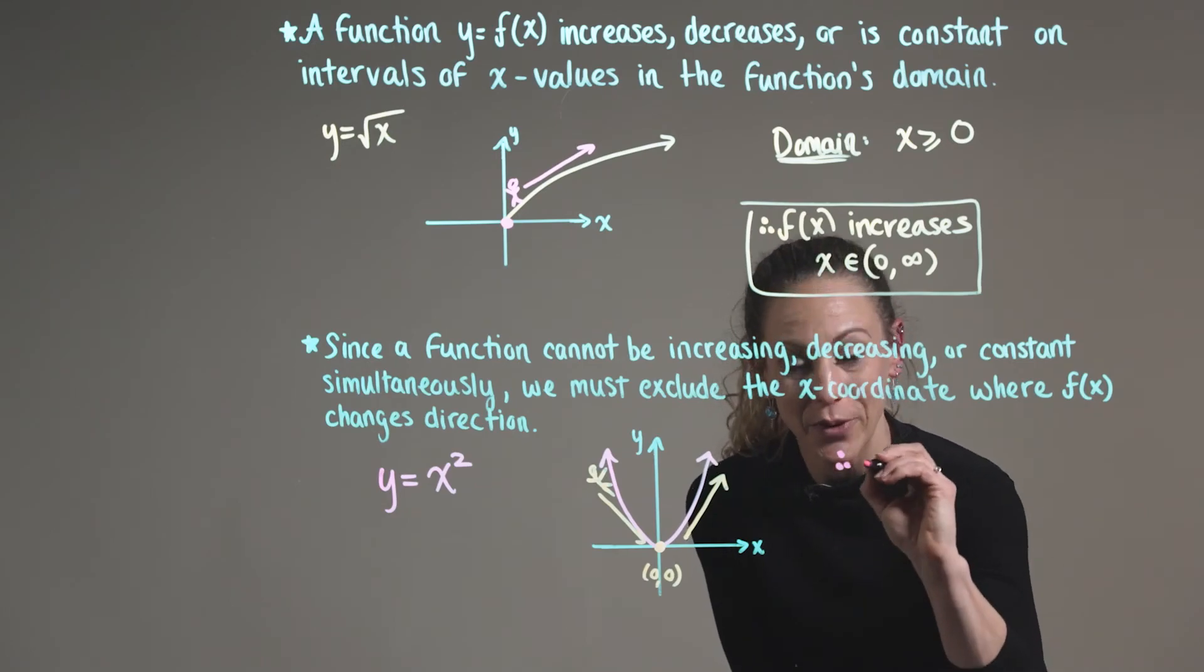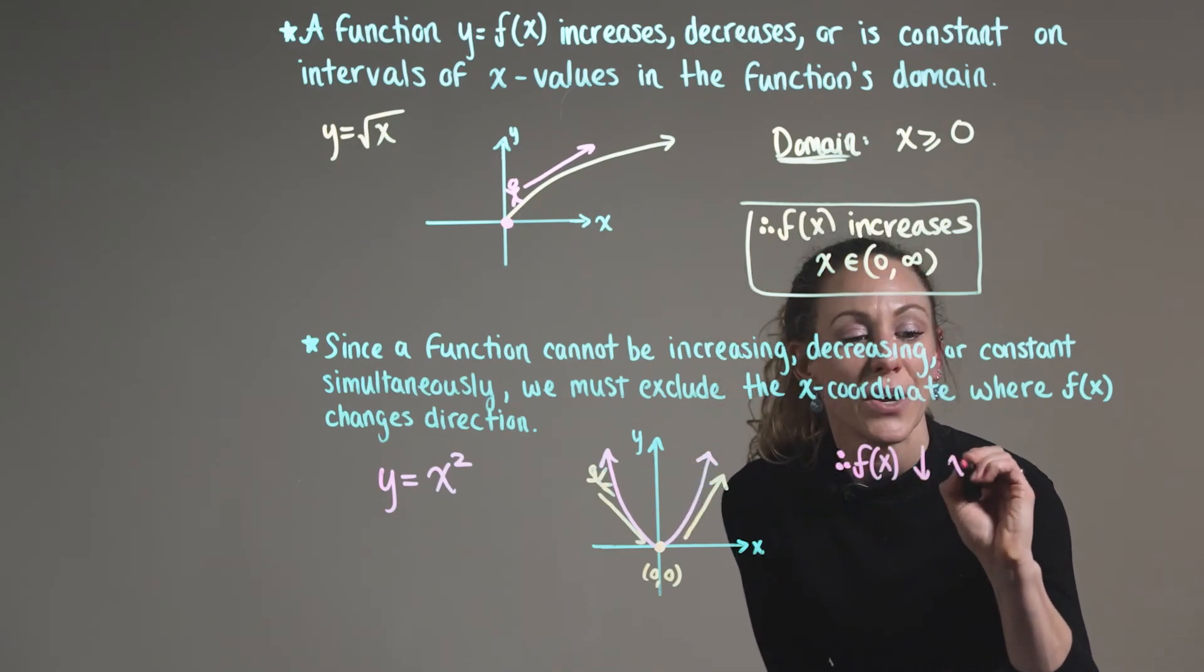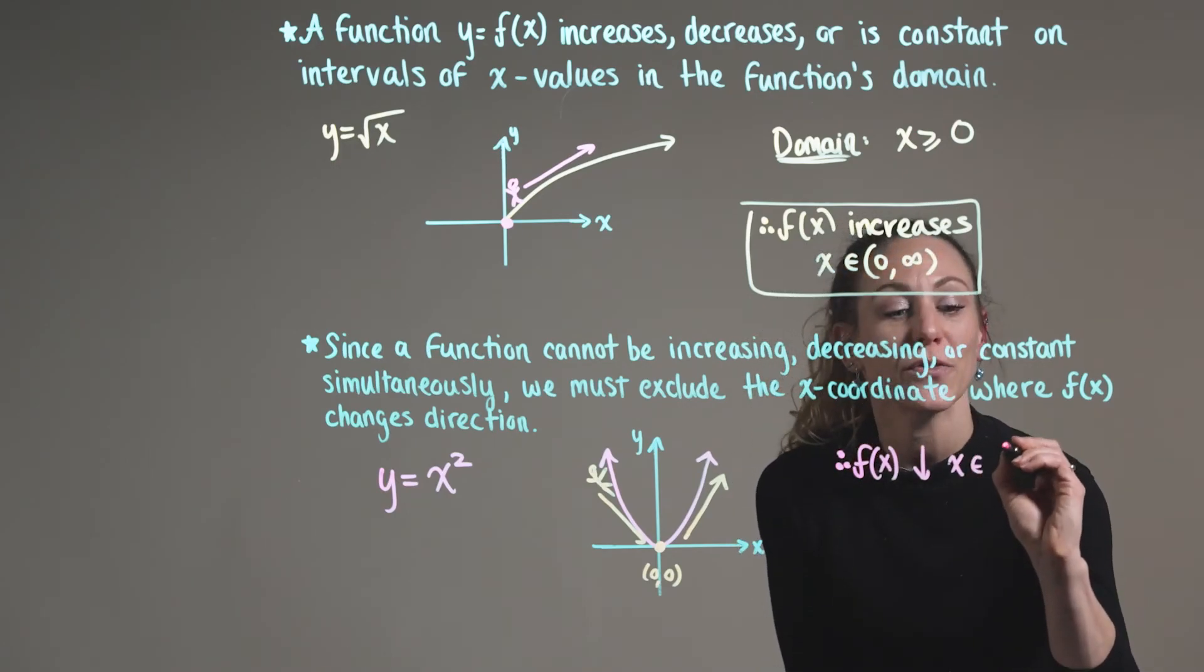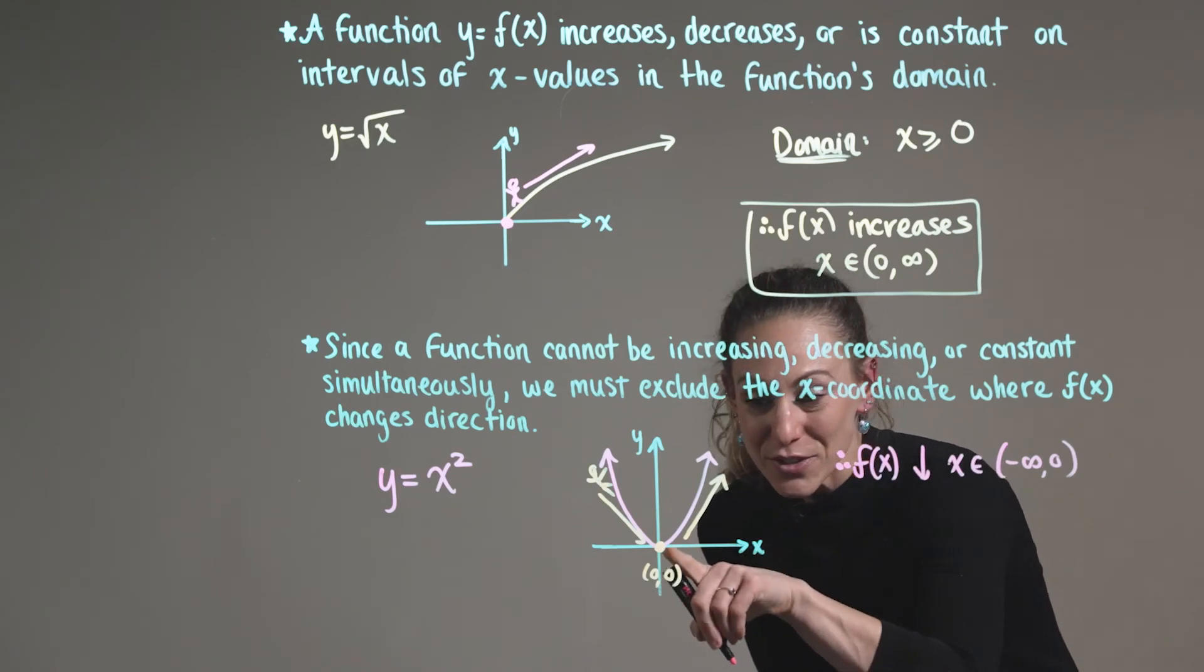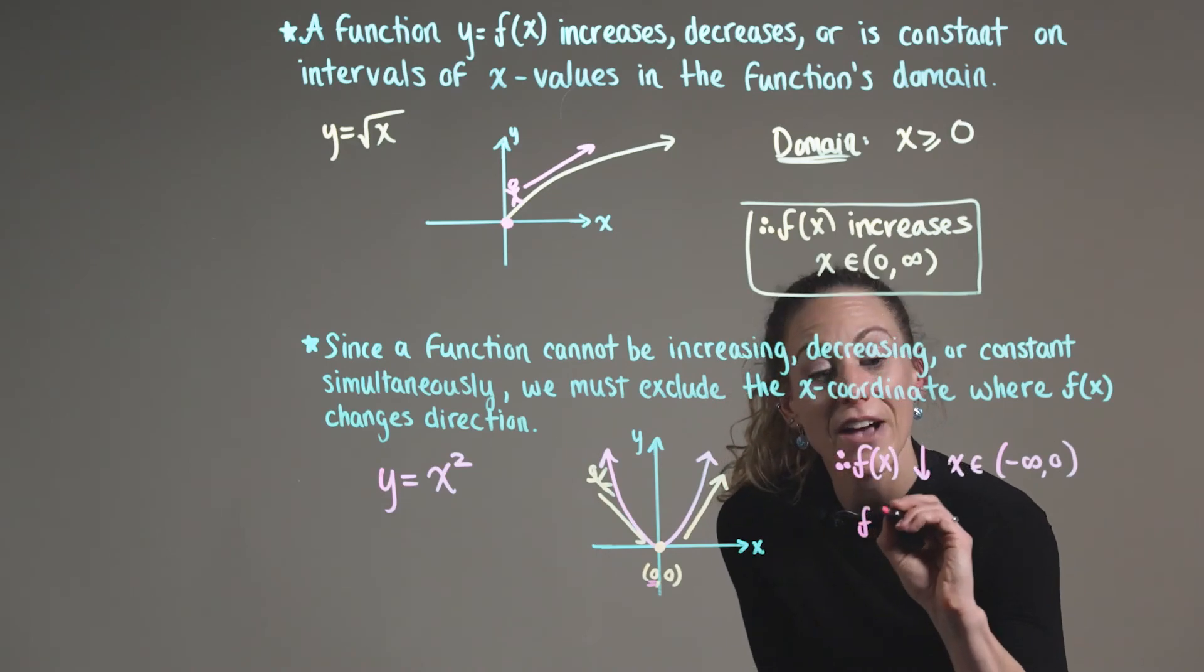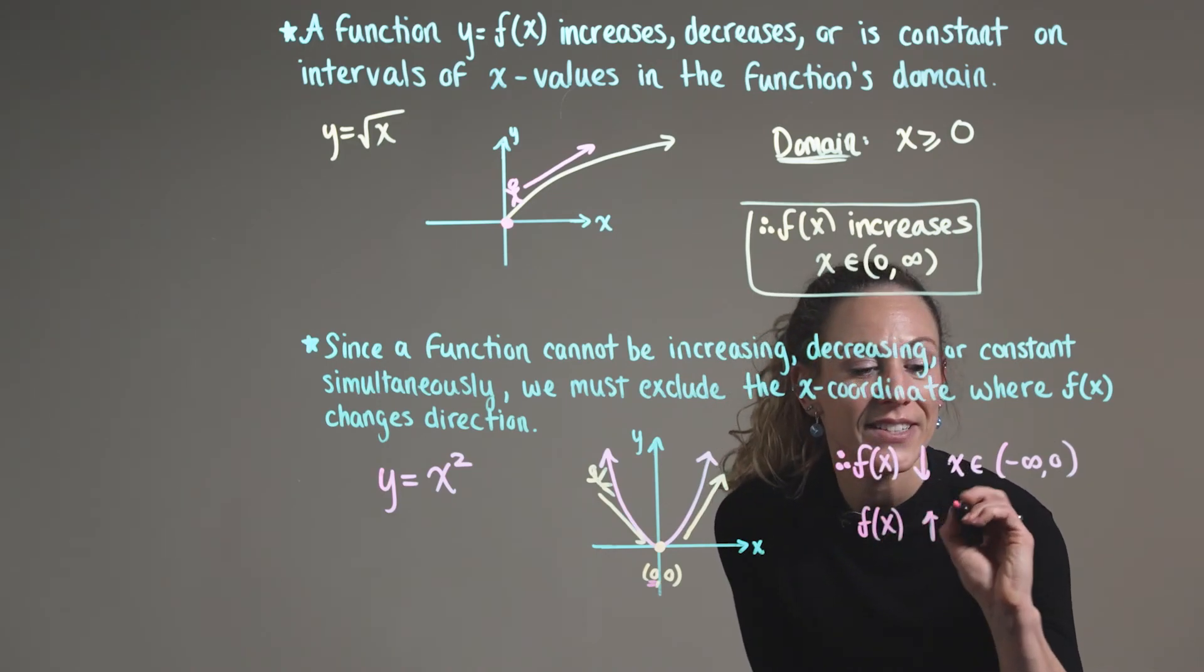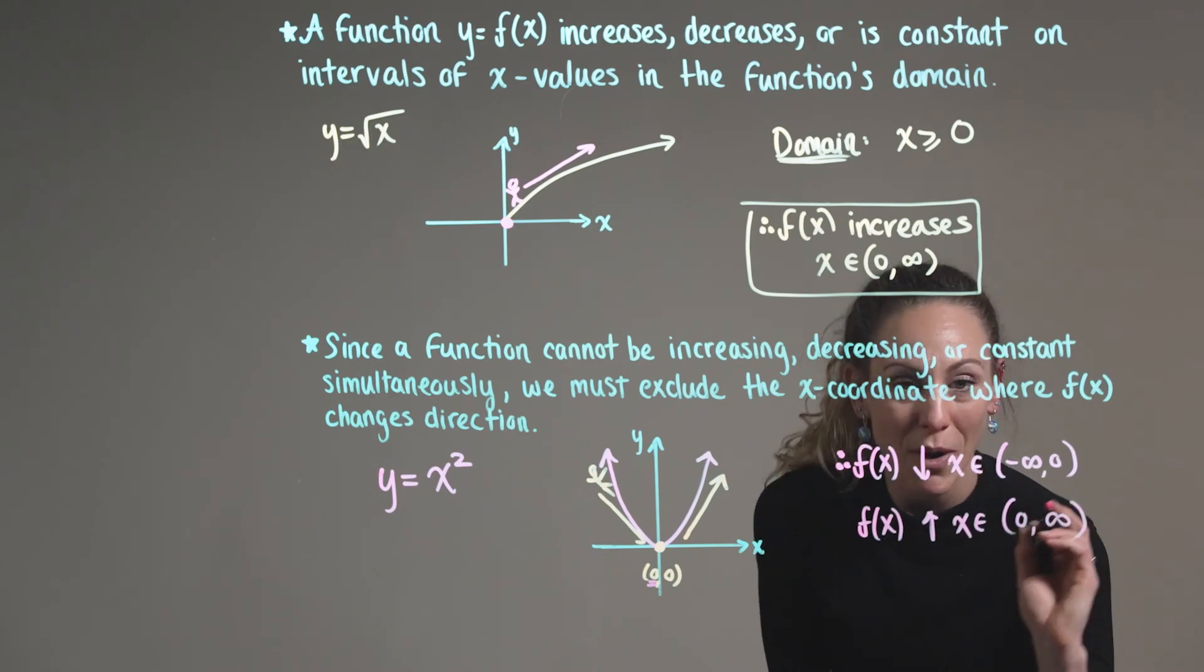And we can conclude that therefore, our function f of x decreases when x is an element of the interval from negative infinity to zero. And we can also see that f is then changing direction in quadrant one, or f of x increases, where x is an element of the interval from zero to positive infinity.